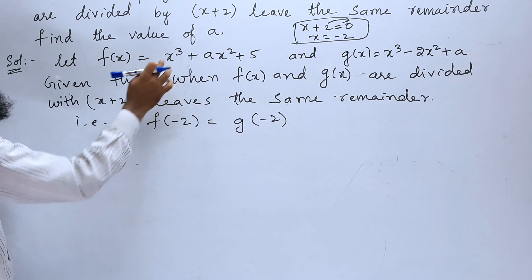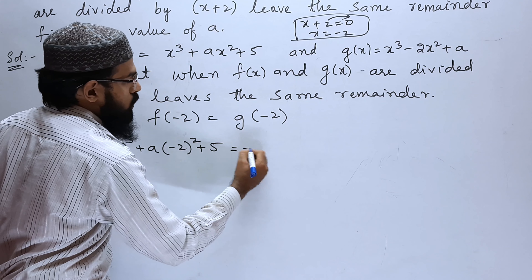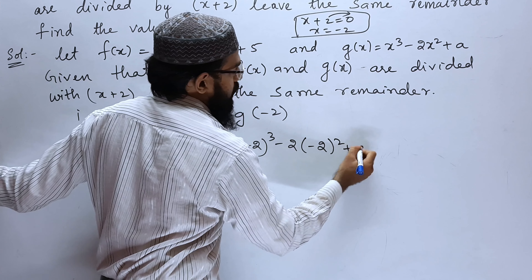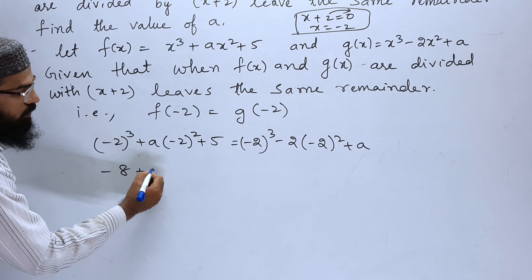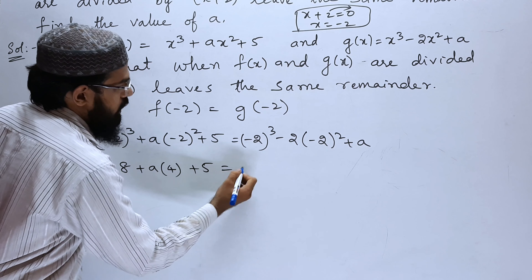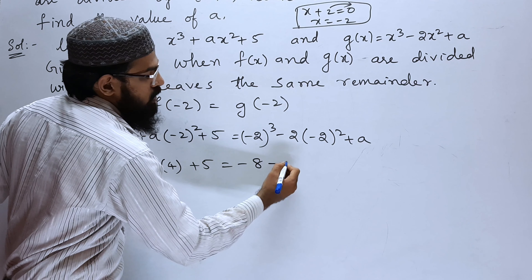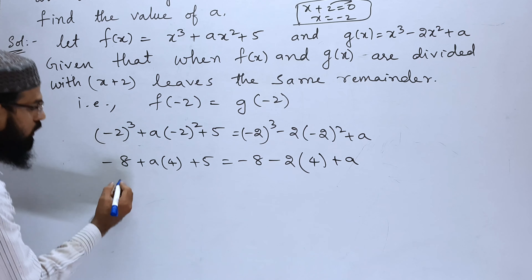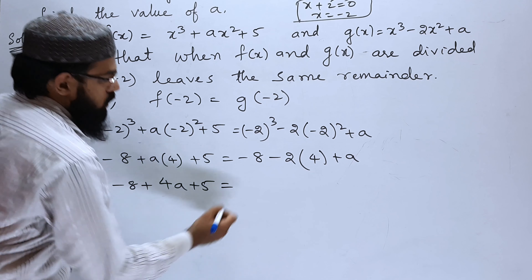Substituting x = −2: (−2)³ + a(−2)² + 5 = (−2)³ − 2(−2)² + a. So −8 + 4a + 5 = −8 − 8 + a, which gives −3 + 4a = −16 + a.